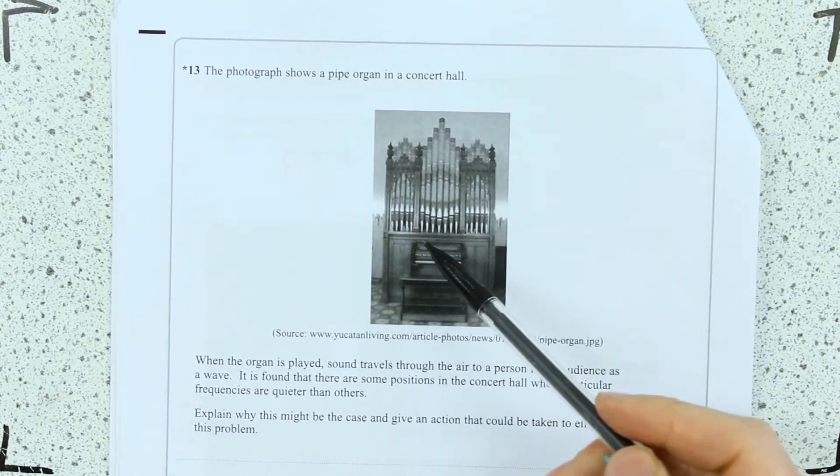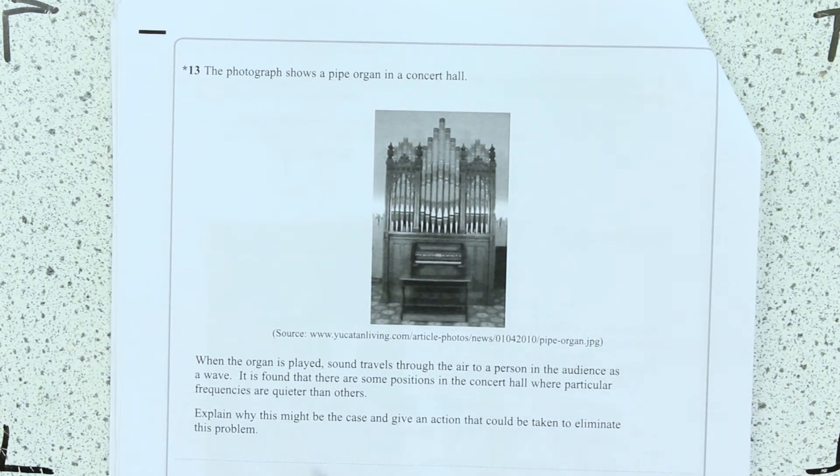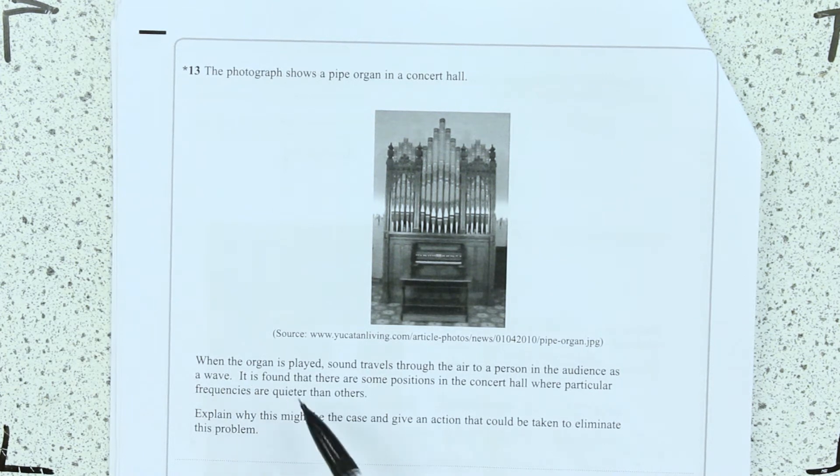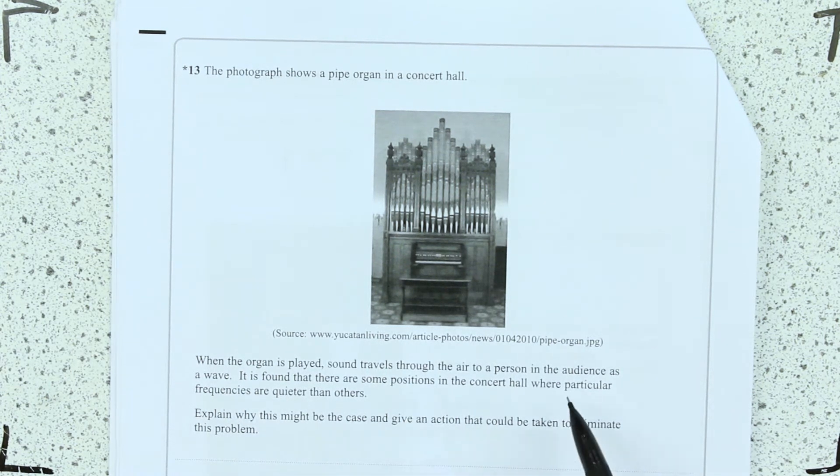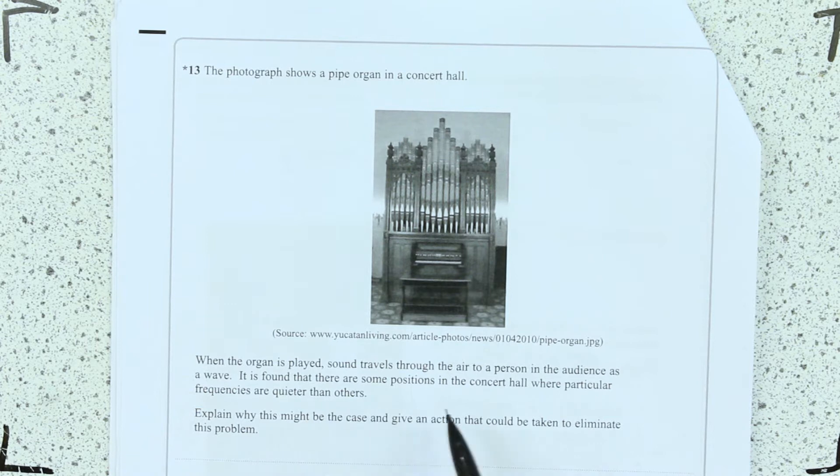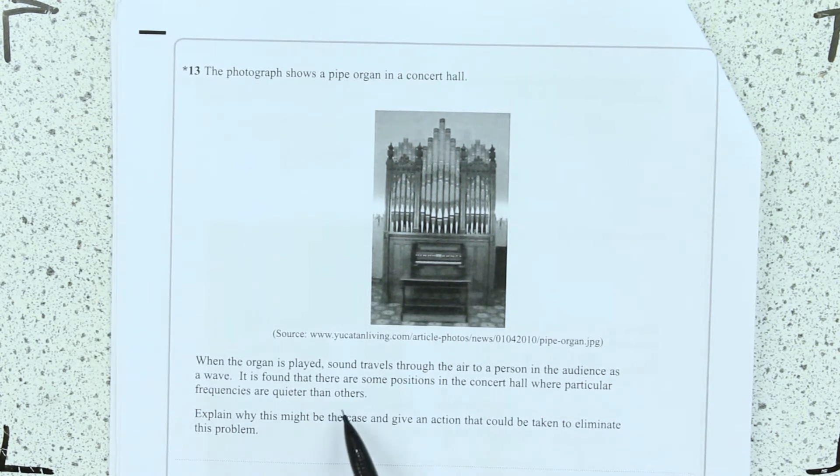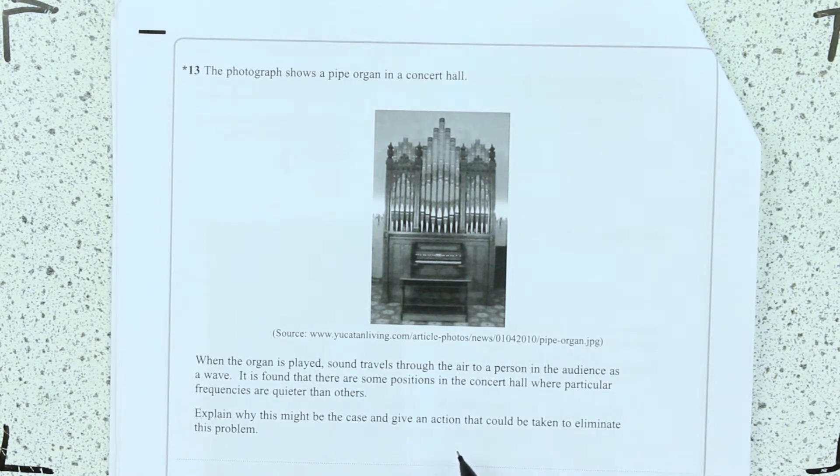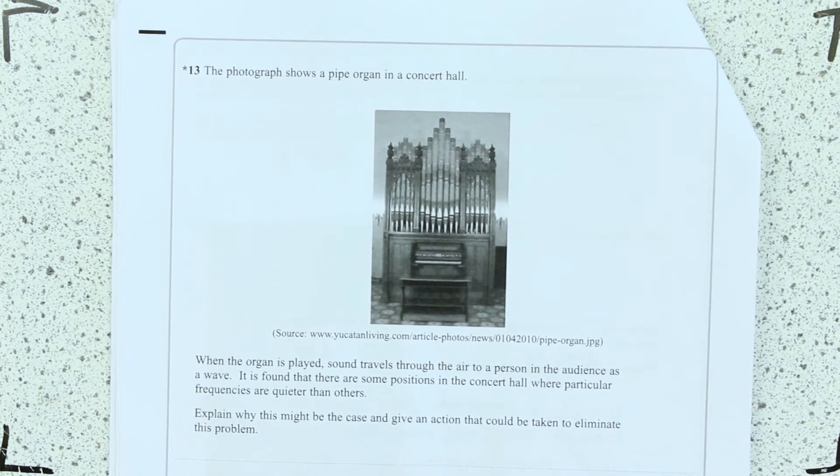Well let's read, it's about an organ, a pipe organ in a concert hall. When the organ is played sound travels through the air to a person in the audience as a wave, it's found there are some positions in the concert hall where particular frequencies are quieter than others. Explain why this might be the case and give an action that could be taken to eliminate the problem.